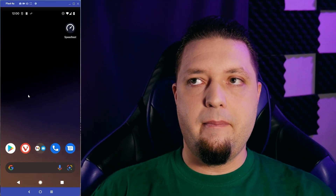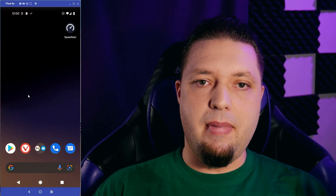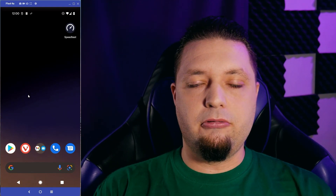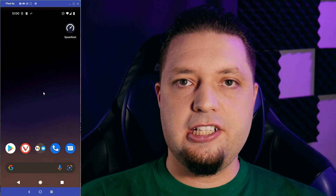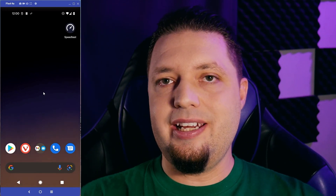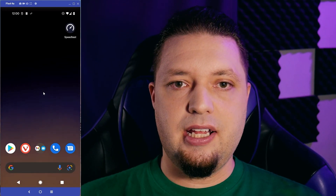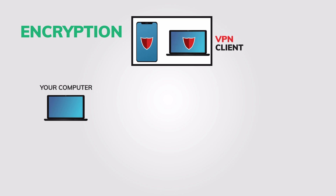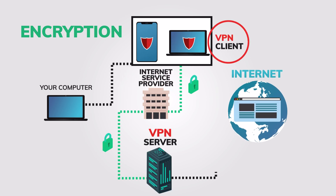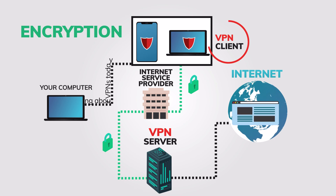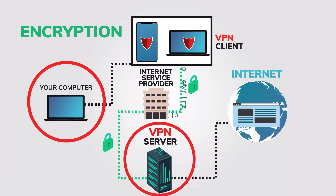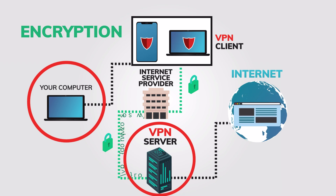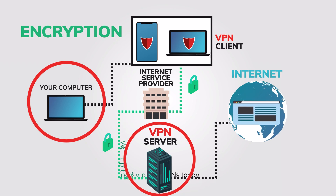So here I am mirroring my Android phone to my computer for ease of recording. Now, how do I change my IP address for security and video streaming and all that good stuff? Well, let me show you. What you need is a VPN. A VPN, or virtual private network, is a system that basically allows you to connect to another server from your computer and route all of your internet traffic through that server.